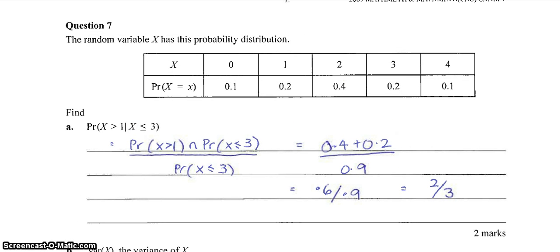Question seven, we're back to probability again. We've got a probability distribution where x can take the values of 0, 1, 2, 3, or 4, and we are told the probability of each of those things. And again, we have another conditional probability question.